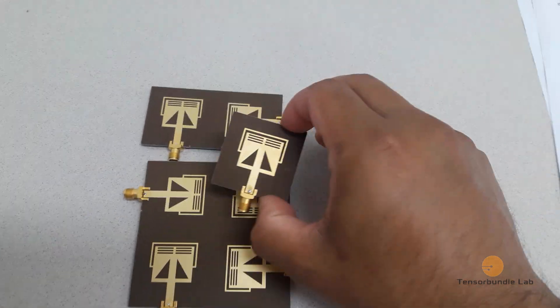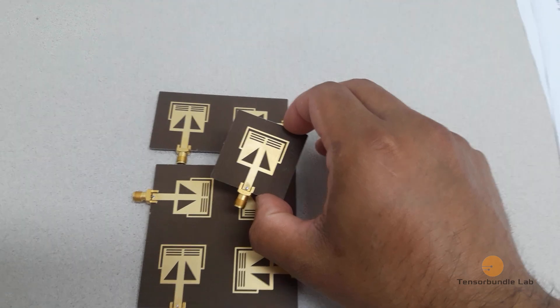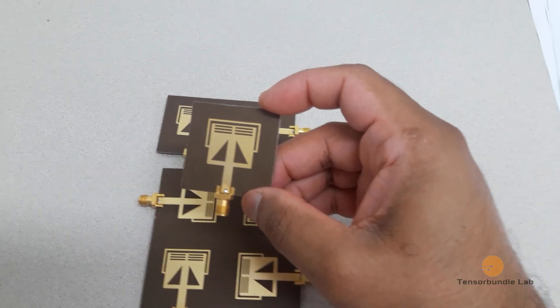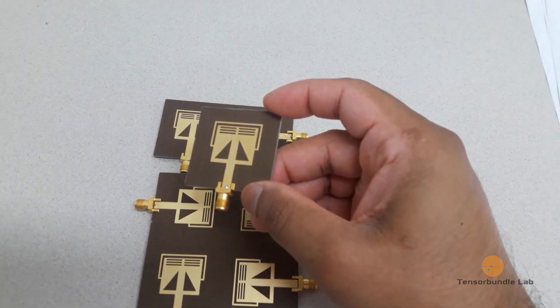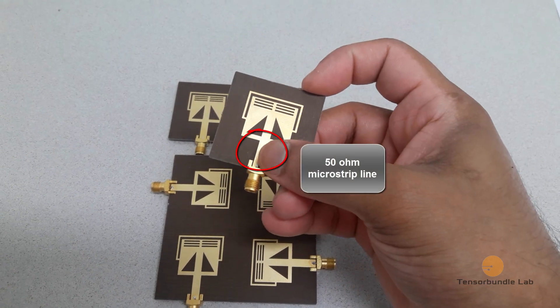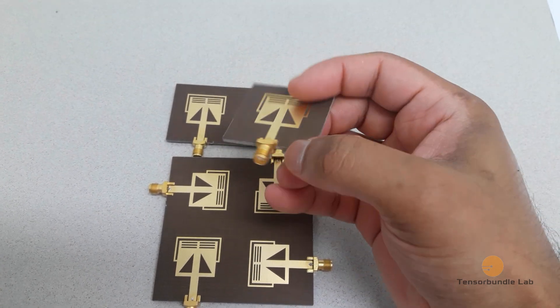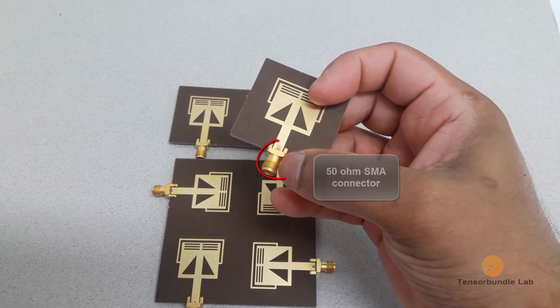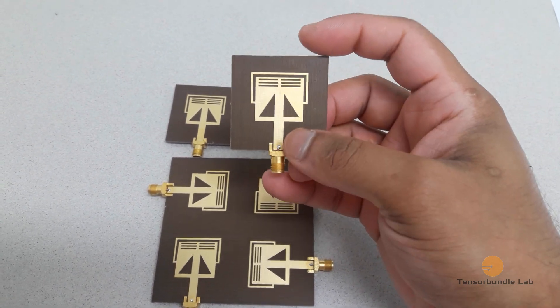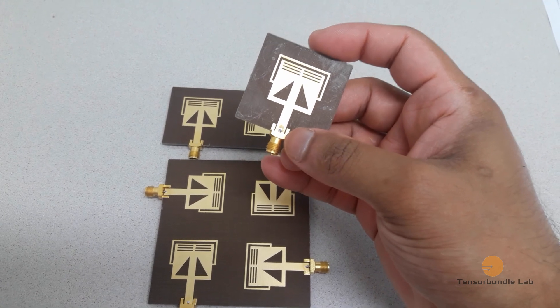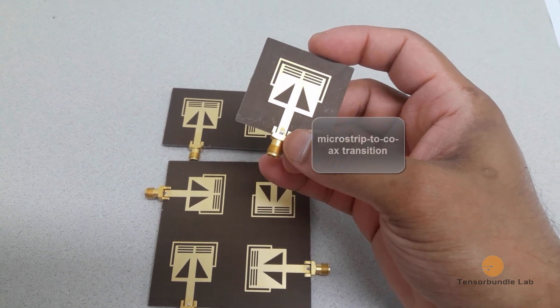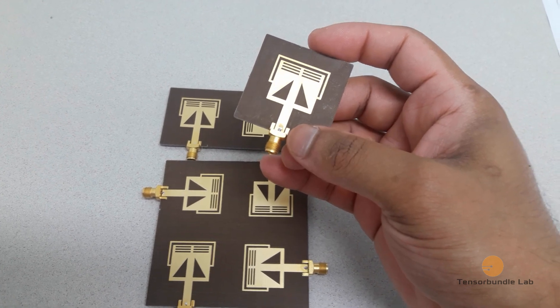Basically this antenna is a slot etched UWB antenna which is fed by this 50 ohm microstrip transmission line, and at the end we connected this 50 ohm SMA connector. We took this SMA connector into consideration during the analysis and design cycle, so the microstrip-to-coax transition is quite transparent and we've got this fabulous matching in measurement results.